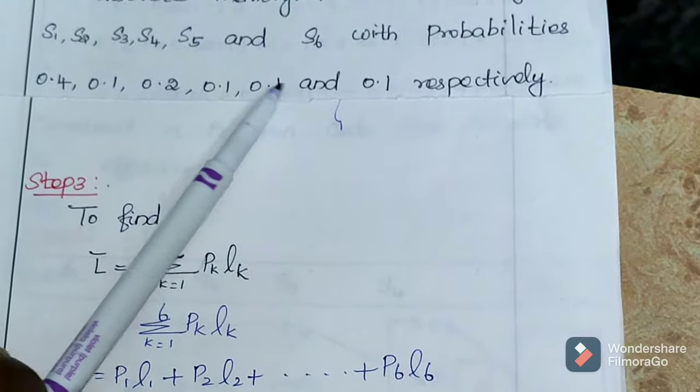So our aim is to find efficiency. Efficiency is represented by the letter eta. Eta equals H of S divided by L bar. We already calculated entropy and average codeword length, just substitute here. Once you simplify, you will get the value of efficiency as eta equals 0.96746. In terms of percentage, multiply by 100, so eta equals 96.7 percent. Thank you.